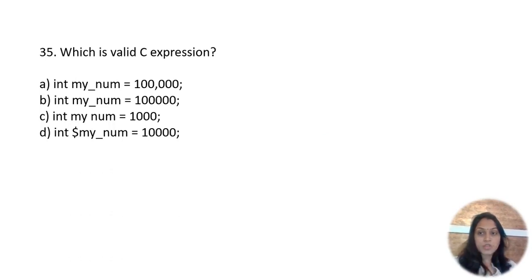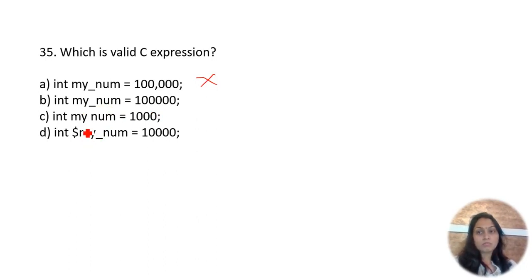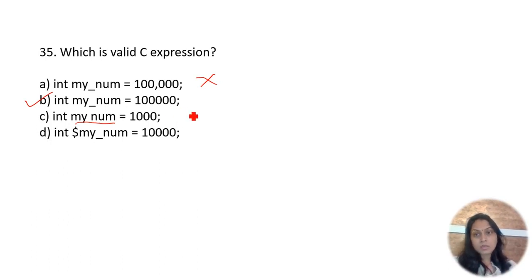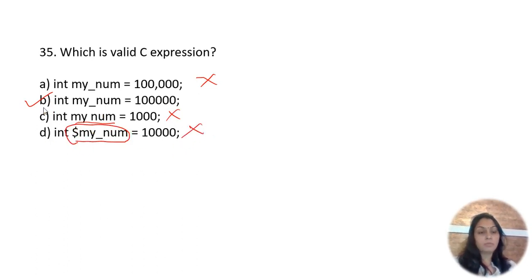Which is a valid C expression? You can't use commas in initializations like '100,'. 'int my_number = 1000' seems sensible. But 'int my number' with a space is not valid — variable names cannot have spaces. Also, a variable name cannot start with a special character. Option B, 'int my_number = 1000', is the correct valid C expression.